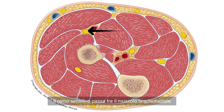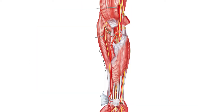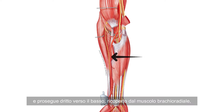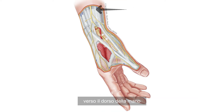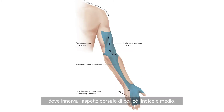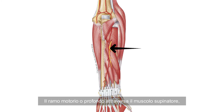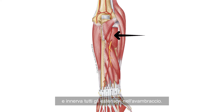The sensory branch passes between the brachioradialis and the extensor carpi radialis longus muscle and travels straight down, covered by the brachioradialis muscle, towards the back of the hand, where it innervates the dorsal aspect of the thumb, the index and middle finger. The motor or deep branch crosses the supinator muscle, where it innervates all the extensors of the forearm.